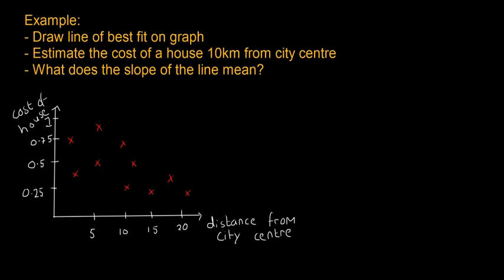So here, as an example, draw the line of best fit on this graph, estimate the cost of a house 10 kilometers from the city center, and what does the slope of the line mean? So we have on the y-axis the cost of a house in millions, so 0.25 million, half a million, 0.75 million, and then 1 million. And then here we have distance from city center in kilometers.